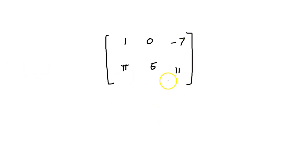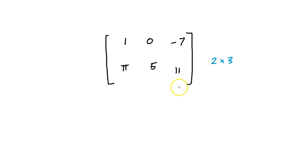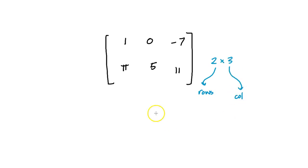Now what have I done here? I have drawn basically a 2 by 3 matrix — all I'm doing is making a grid of numbers. They can be any numbers I want. Now what does the 2 and the 3 refer to? The 2 refers to the number of rows and the 3 refers to the number of columns. So if I had a single element, that would be a 1 by 1 — 1 row, 1 column. And if I had 1, 2, 3 in a single row, that would be 1 row, 3 columns.